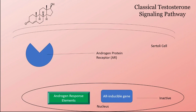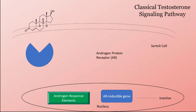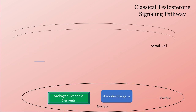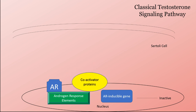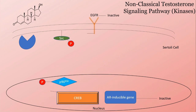The first pathway is known as the classical testosterone signaling pathway. Testosterone will cross the plasma membrane of the Sertoli cell and bind with a protein called the androgen receptor, AR. The AR will then undergo a conformational change and will proceed to enter the nucleus and target AR elements. Additionally, the binding of the AR to the ARE will recruit co-activated protein and will activate the AR-inducible gene.